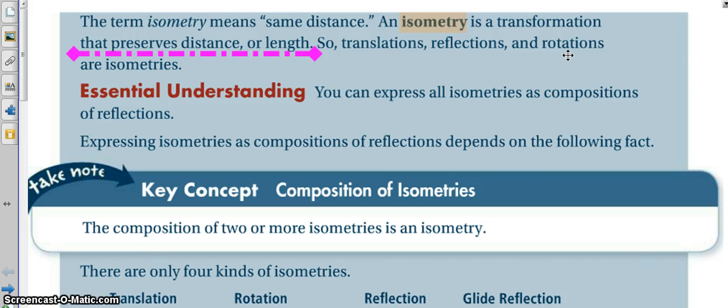The only thing that we'll get to, and I forget if it's this year or next year, but dilations change your size. So, you can express all isometries as compositions of reflections.